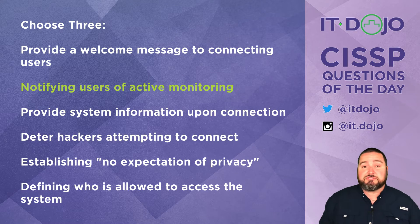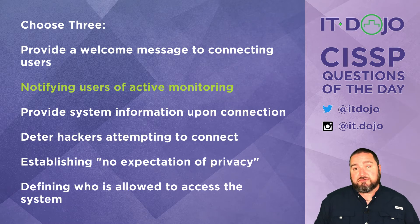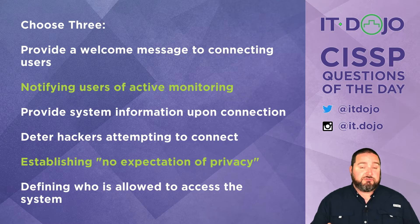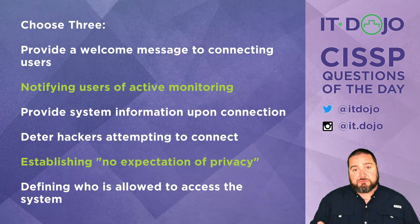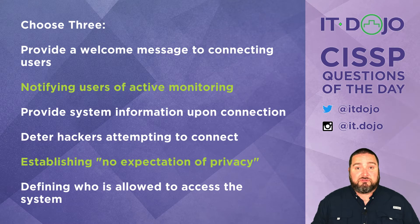The next choice is one of the correct choices: to establish that people have no expectation of privacy. By connecting to the system or resource, users consent to monitoring and should not have an expectation of privacy while connected to this network or system. That's an important thing to establish so that if they don't like that, or if they do want privacy, they know not to connect to your system.